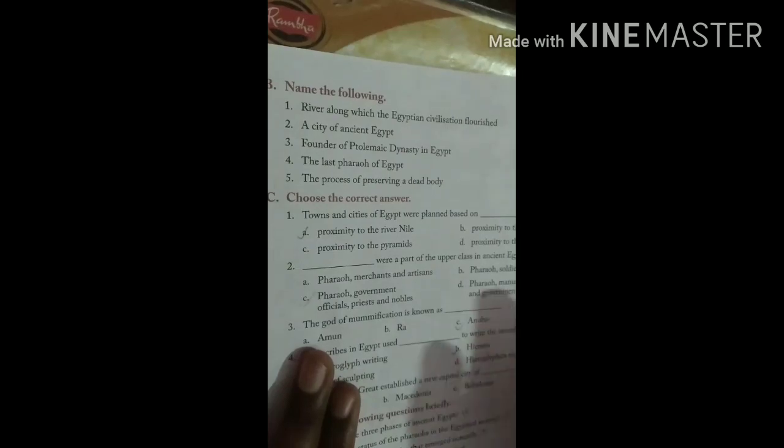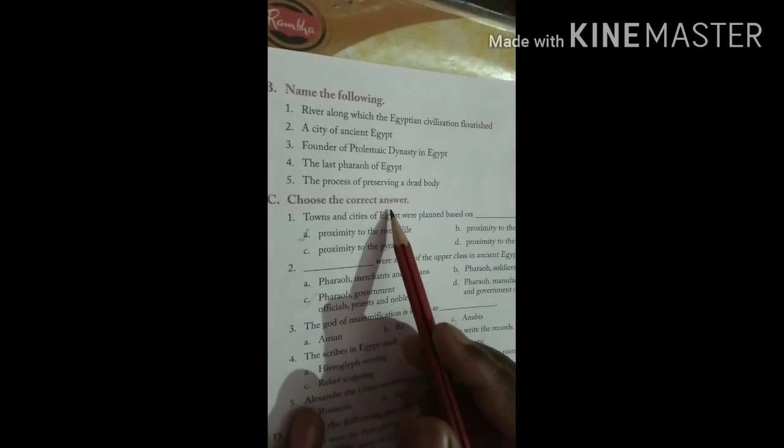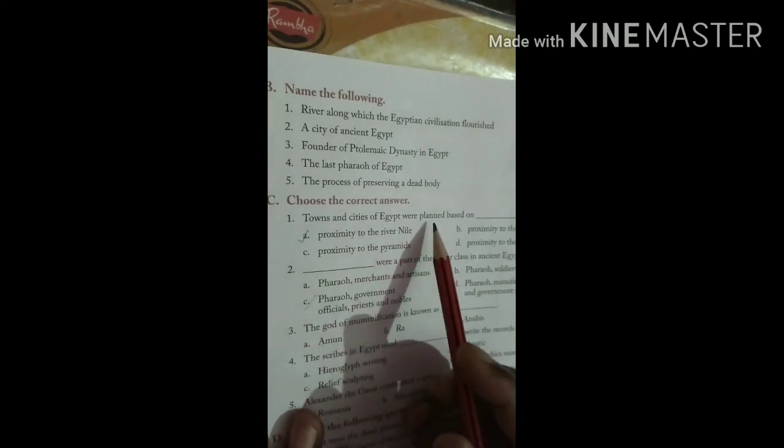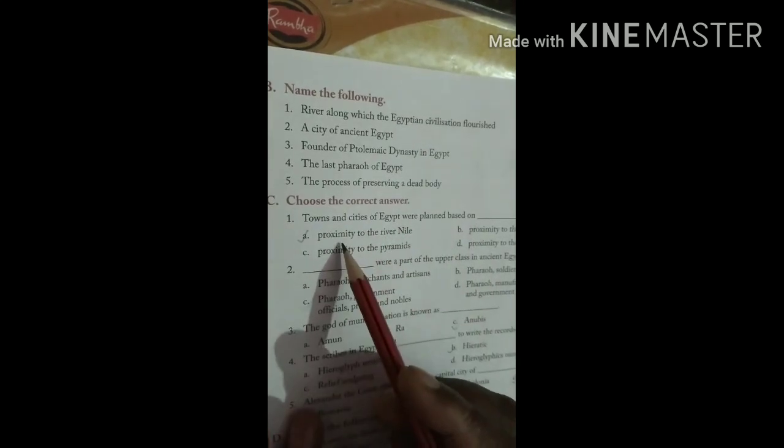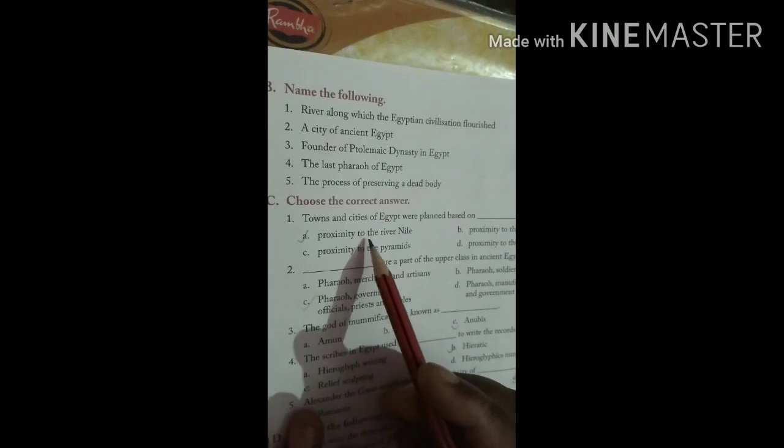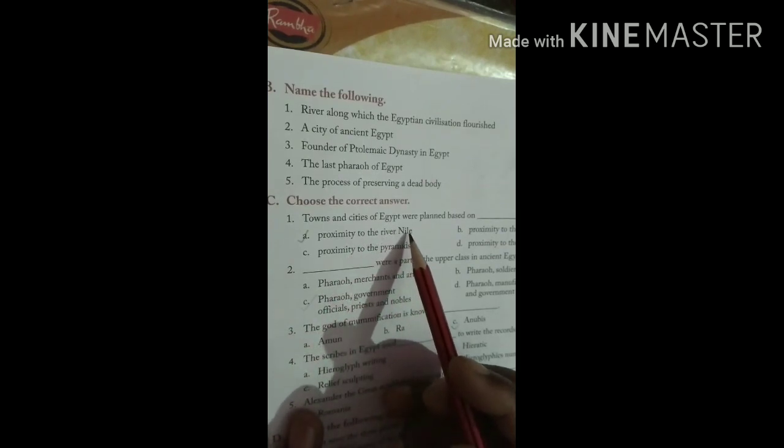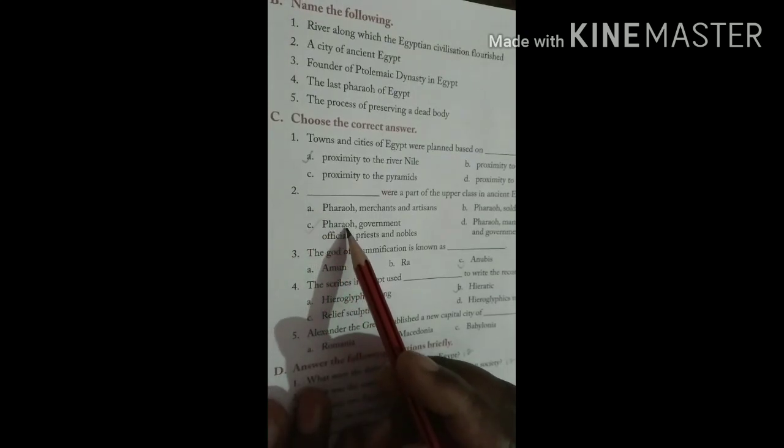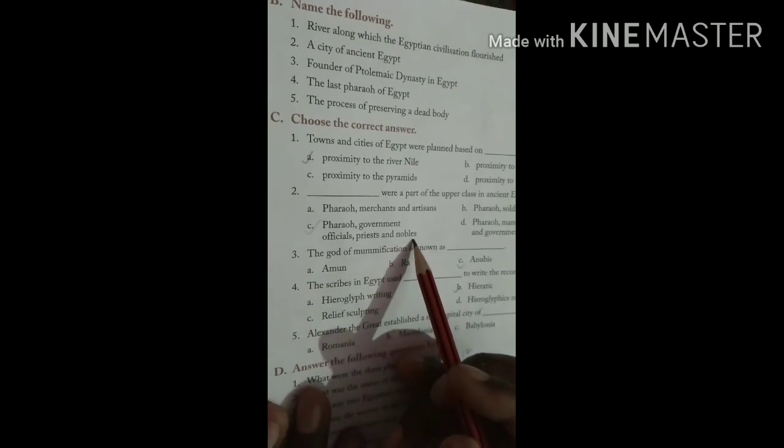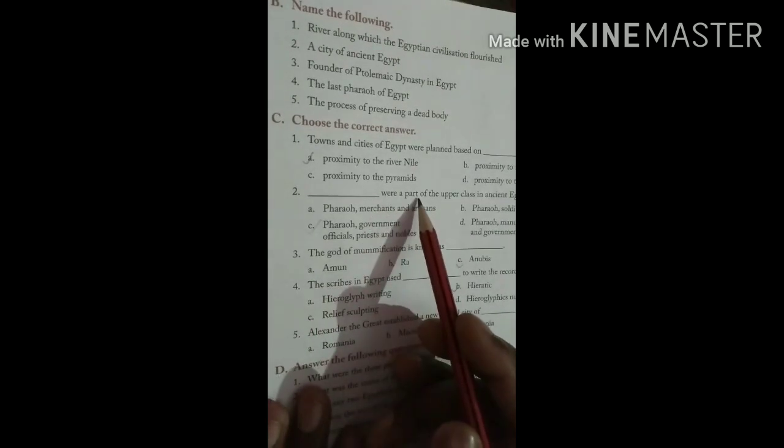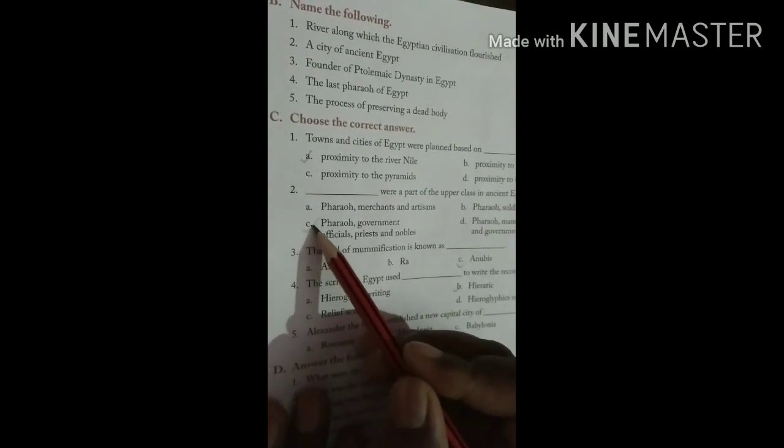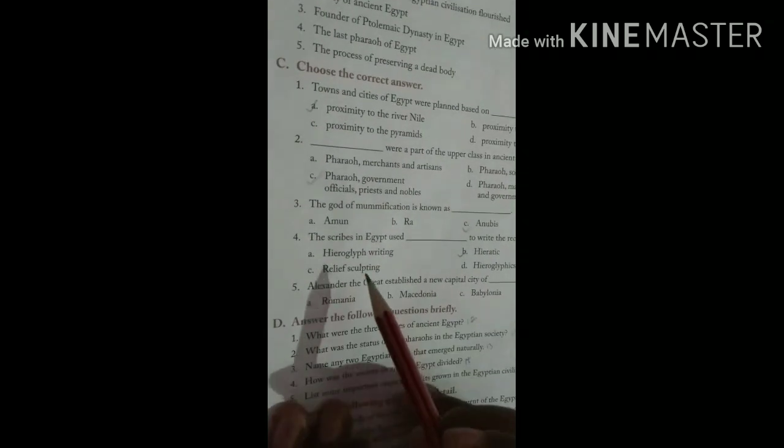Now choose the correct answer. Towns and cities of Egypt were planned based on proximity to the River Nile. Now second: Pharaoh, government officials, priests, and nobles were a part of the upper class in Ancient Egypt. Here will be C option.